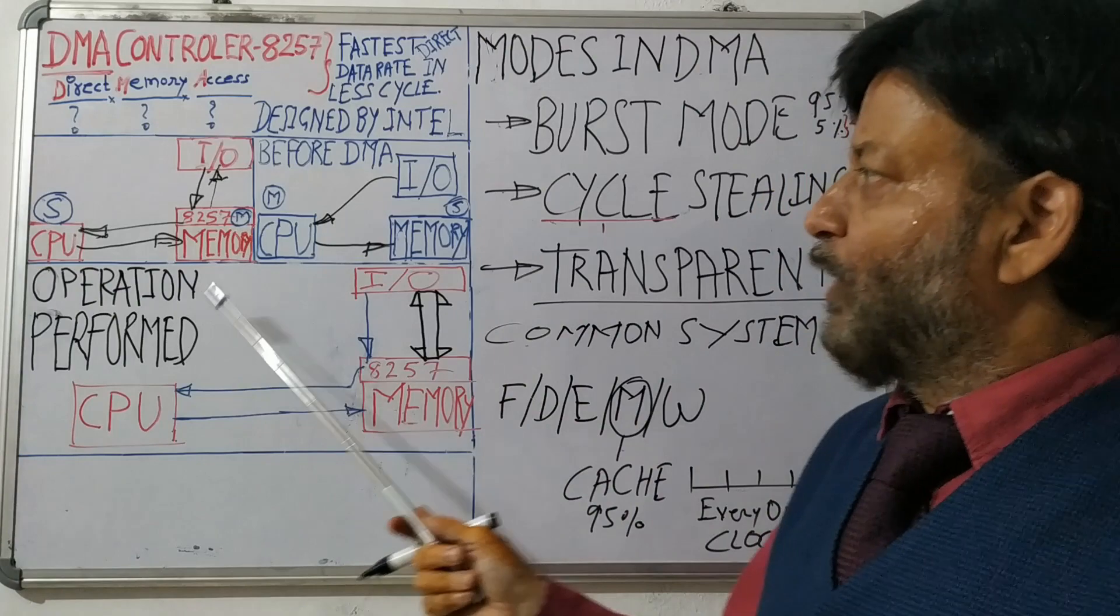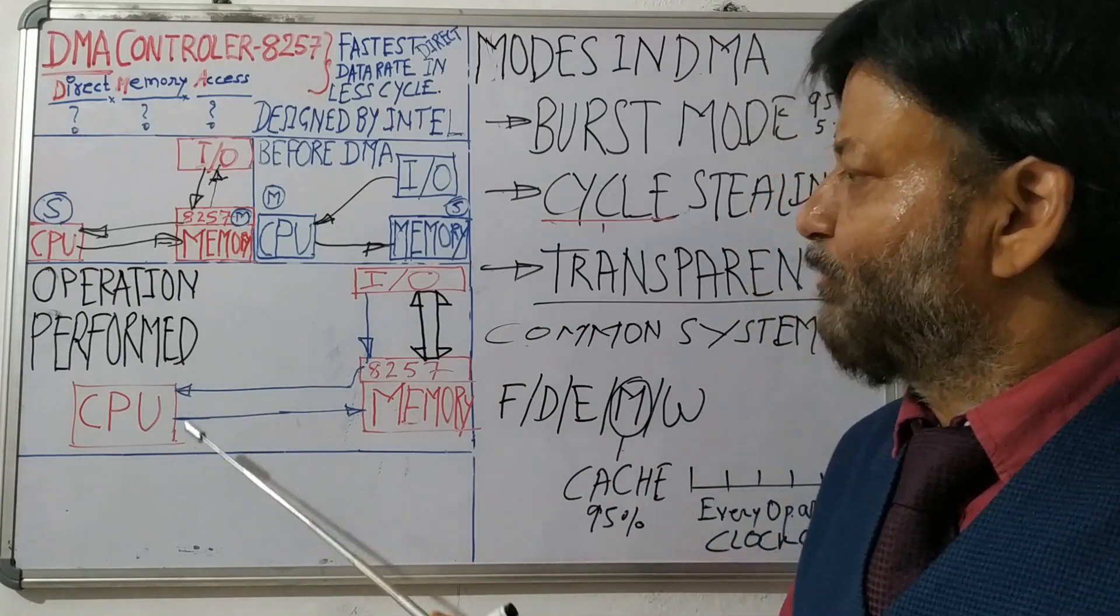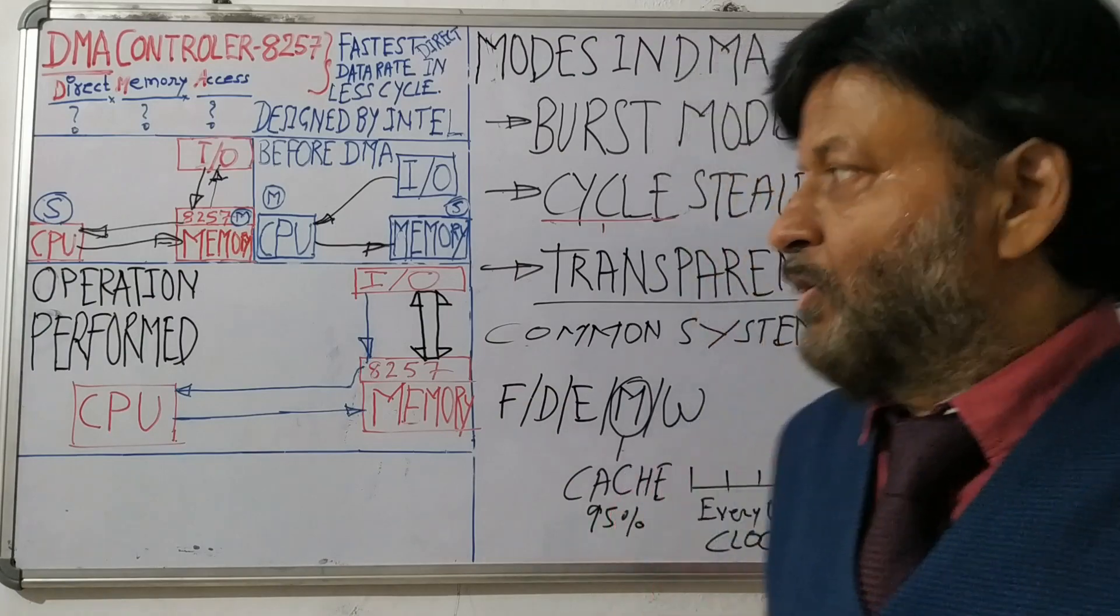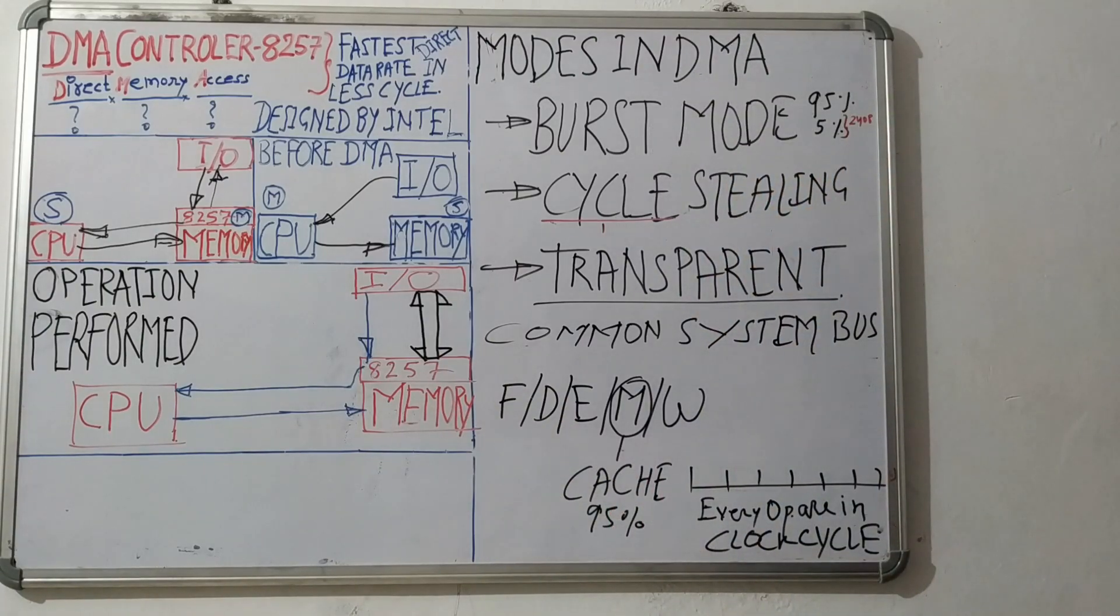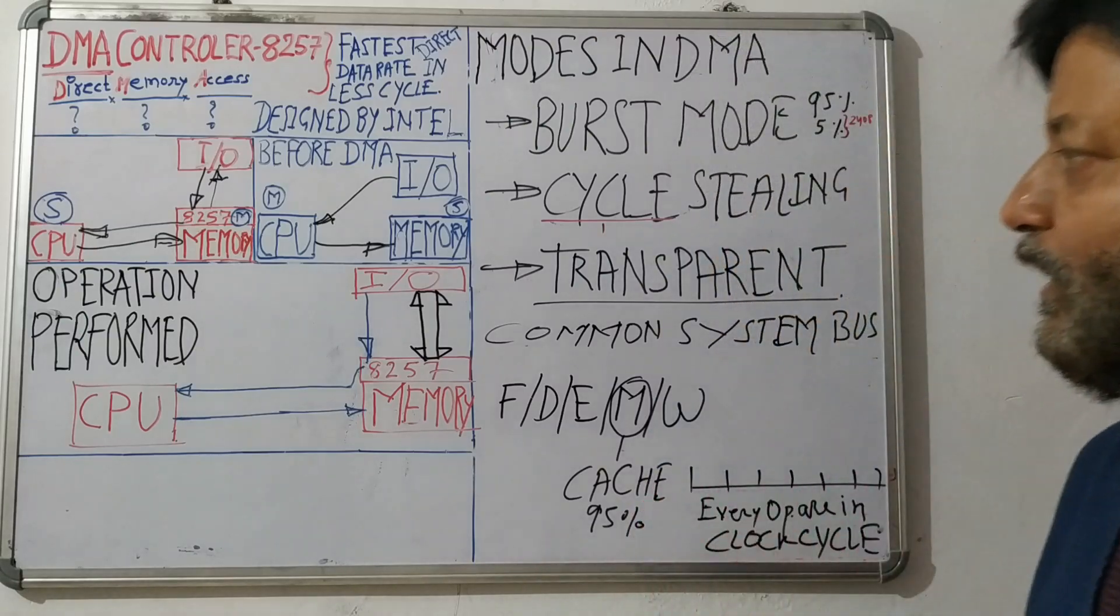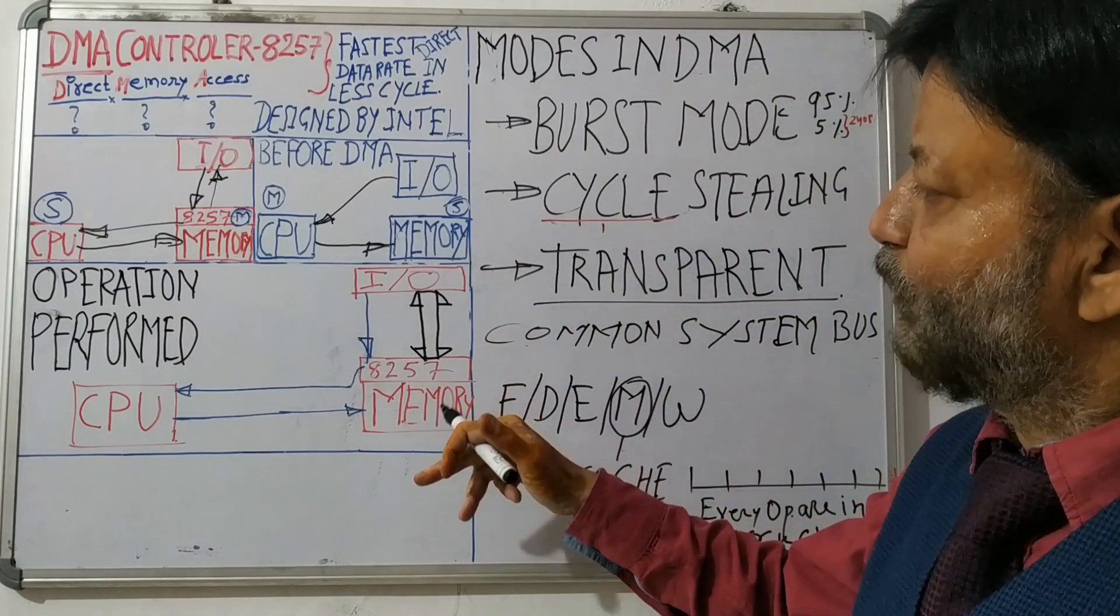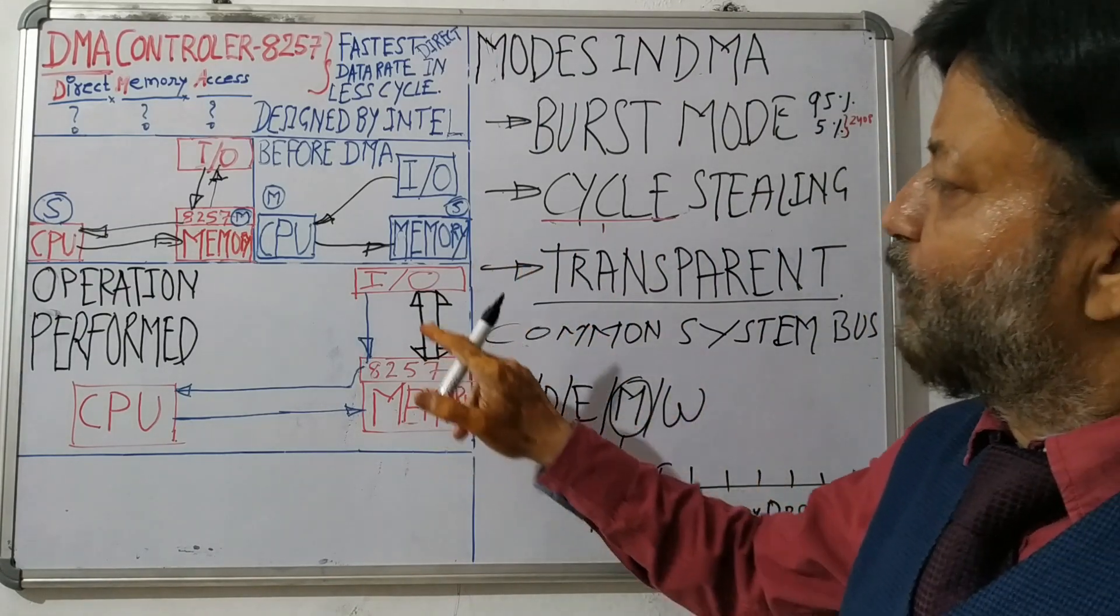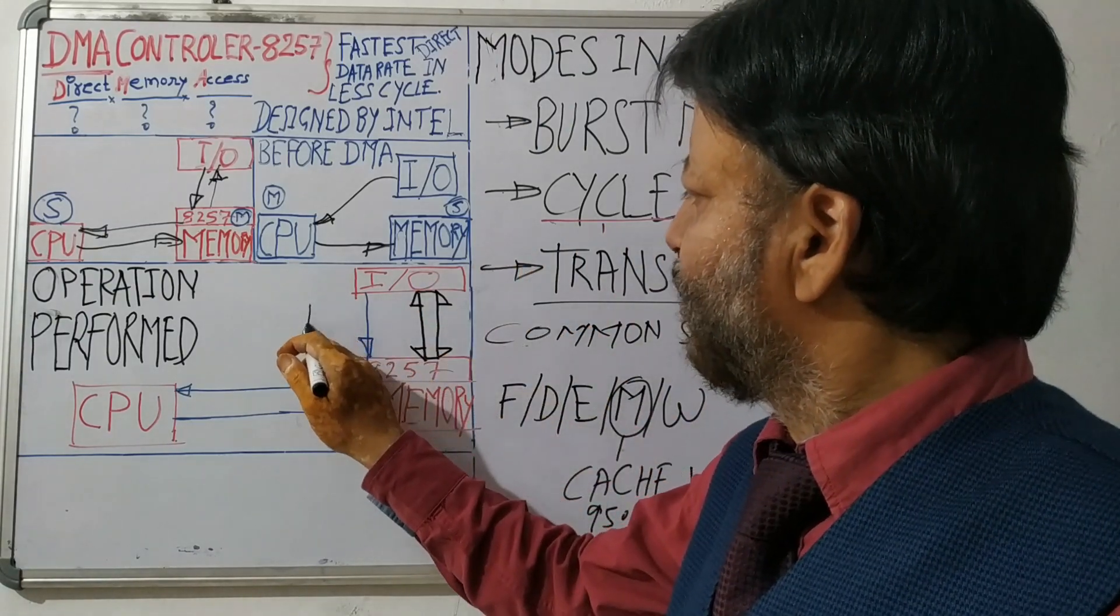Now let us see how the operations are performed with the help of 8257 DMA controller. So how operations are performed whenever IO wants to send some data or receive some data from memory or write some data to memory and retrieve some data from memory. So what IO will do?